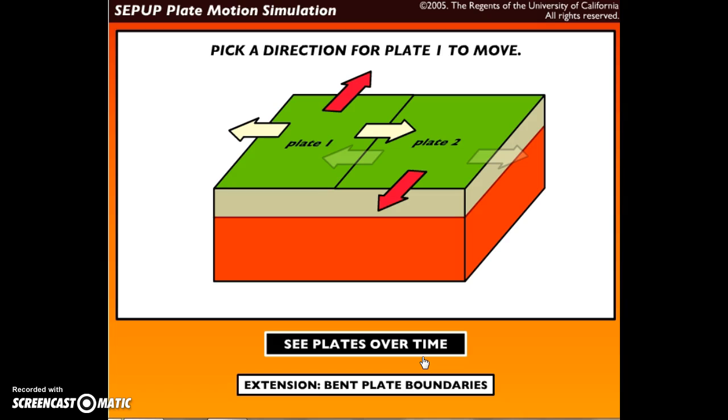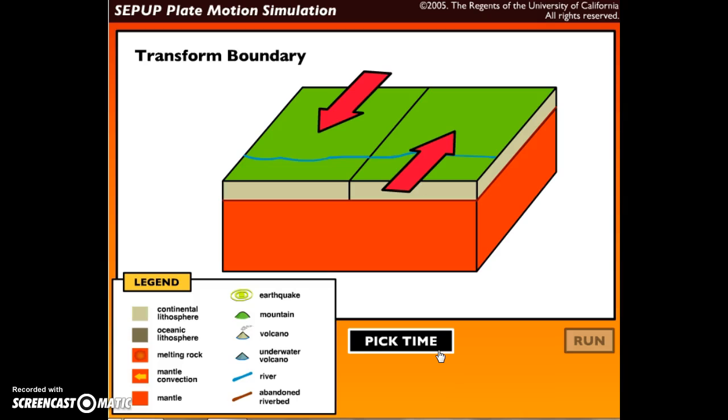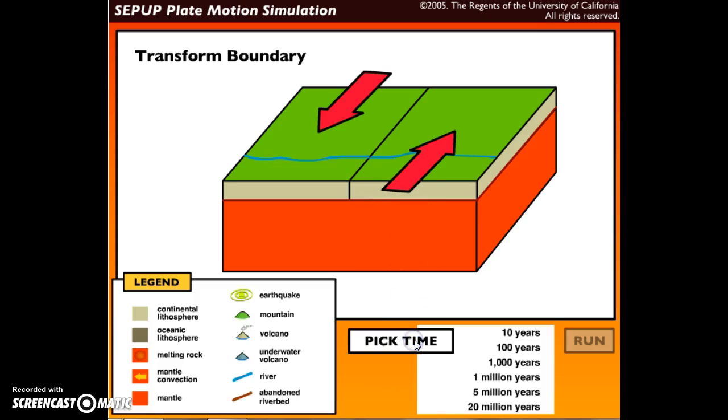So yet again, be very familiar with the legend. With the transform fault boundary, the plates grind past each other. All right, so I'm going to pick a time. Yet again, it's going to be 20 million years.